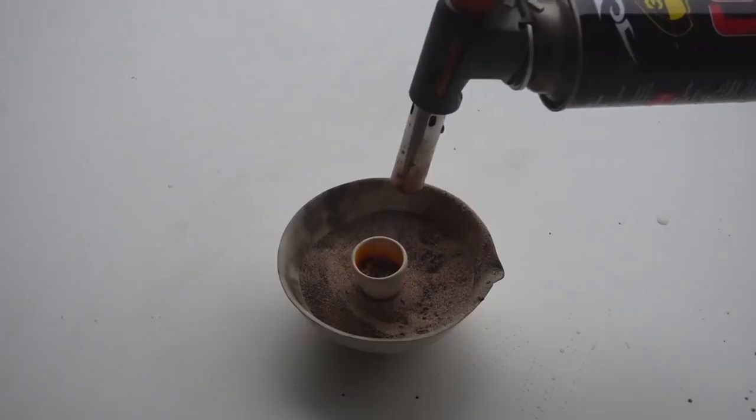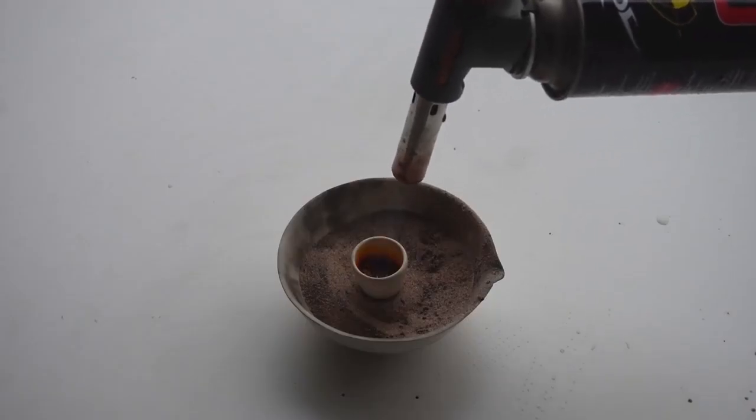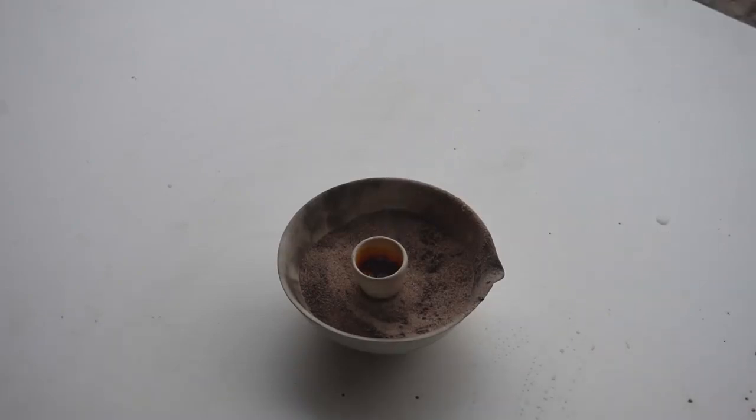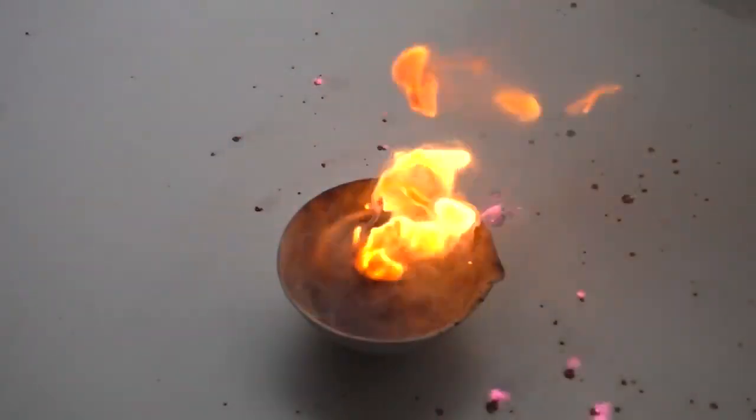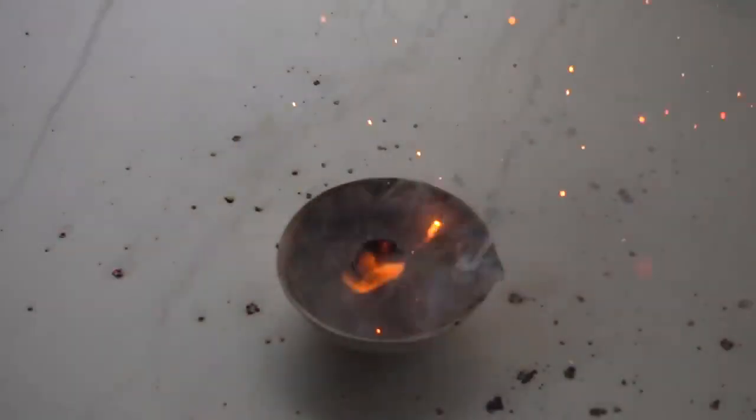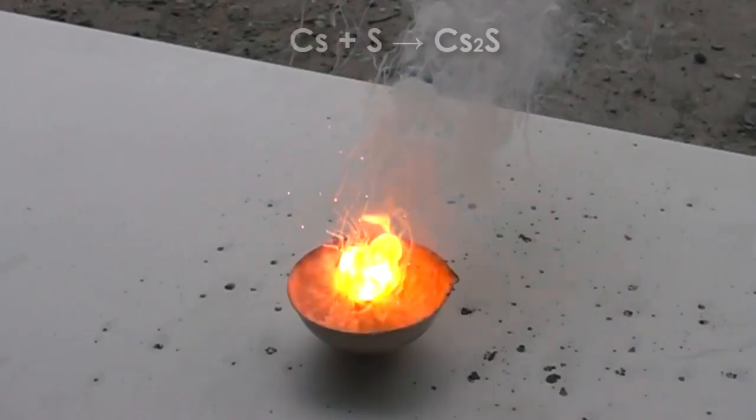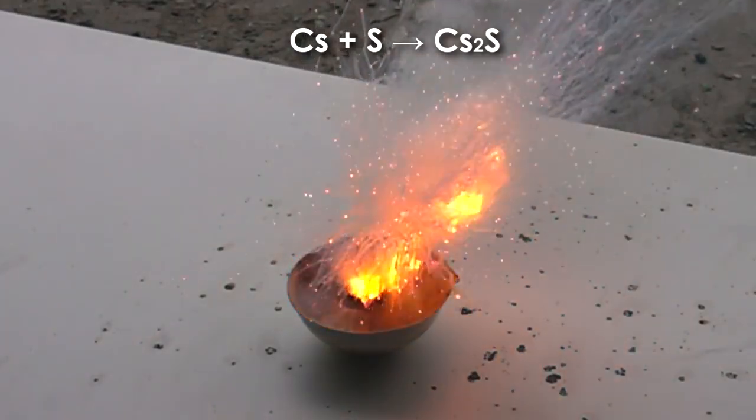The coolest reaction by far was cesium with sulfur, when we threw the pieces of cesium in molten sulfur. In that reaction, the two elements formed cesium sulfate.